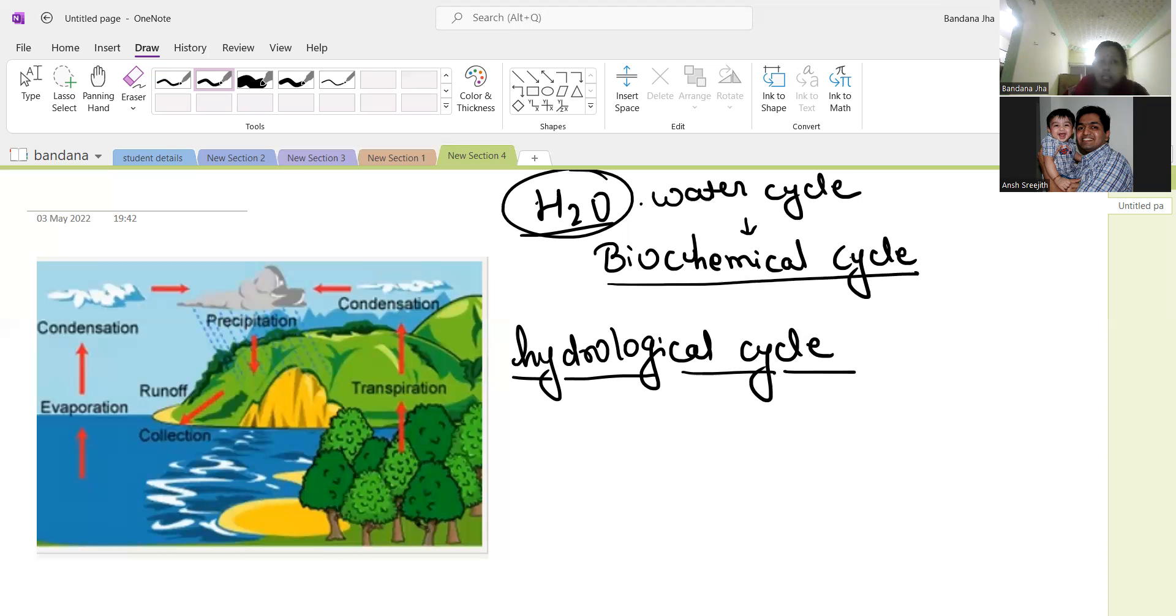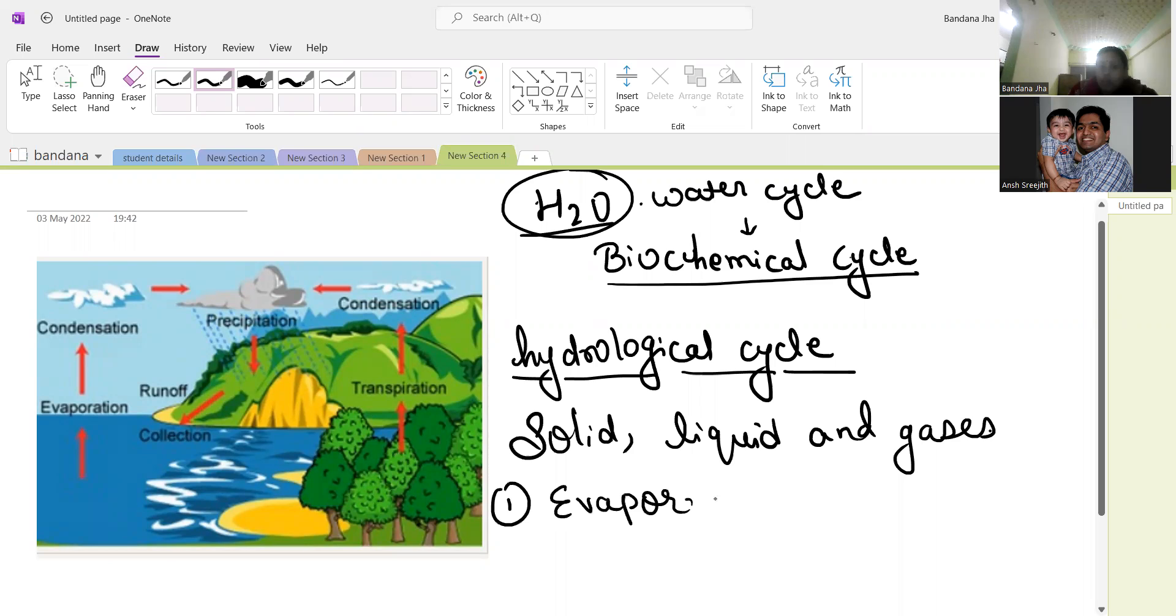That water cycle is a whole process between my earth and the atmosphere where water is changing into three forms. What are those three forms? Solid, liquid, and gases. According to this diagram, first is my water evaporate. First process is evaporation of water.